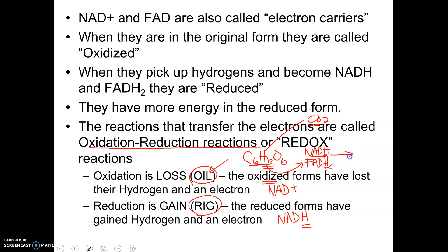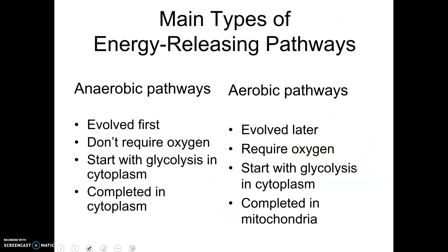Ultimately, oxygen is going to pick up those electrons and become reduced at the end. So in the overall reaction you don't see NAD and FAD — they're intermediates, electron carriers that carry the hydrogens from glucose at the very beginning to oxygen waiting at the very end, about 30 steps later. That's a preview of redox reactions.